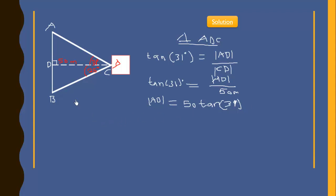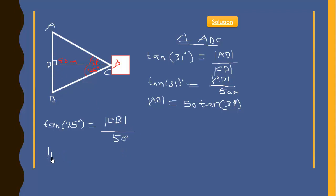We also need to find BD using the tangent ratio. The tangent of 25 degrees equals the opposite side DB over the adjacent side 50. Therefore DB equals 50 times tan(25 degrees).